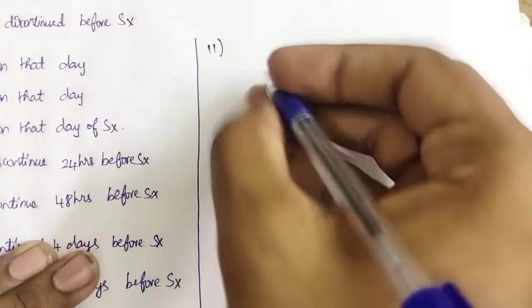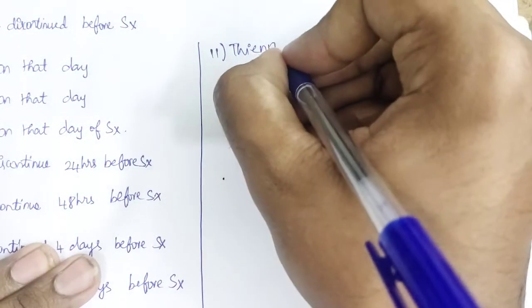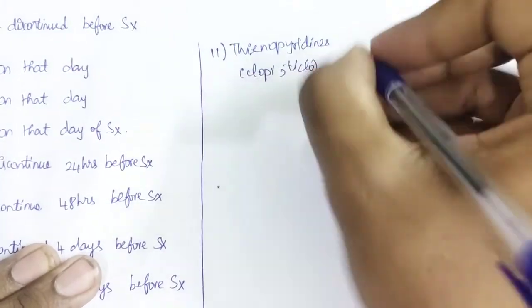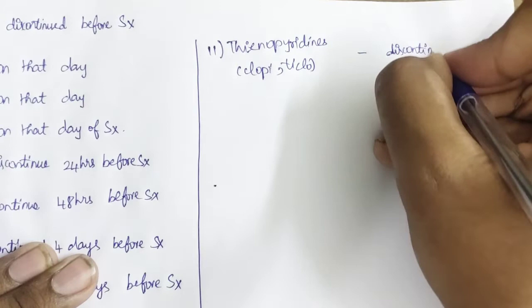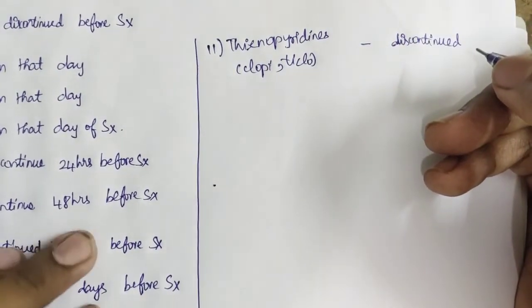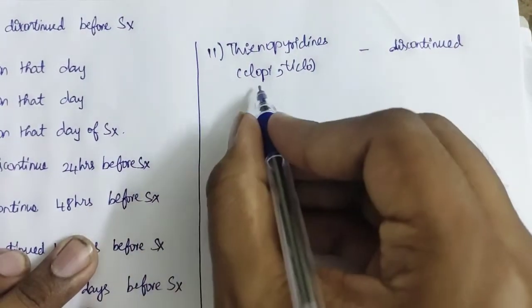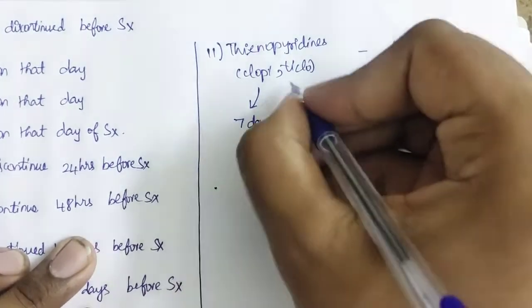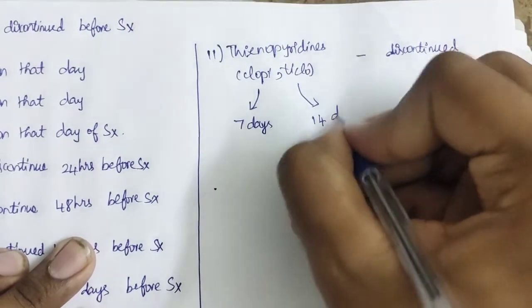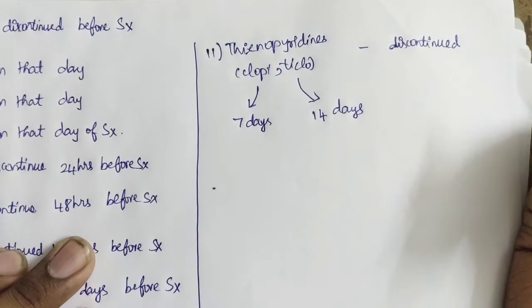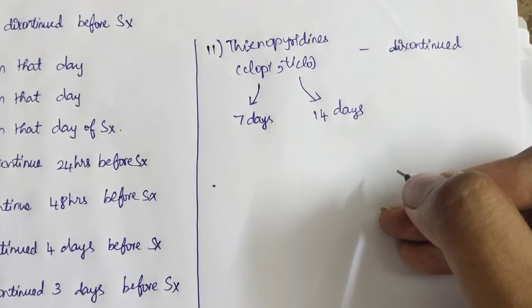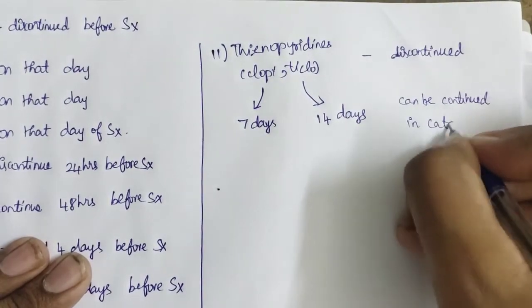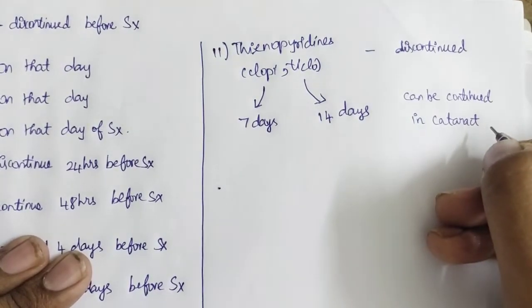The next is thienopyridines, like clopidogrel or ticlopidine. In some books, it has been given that there is a waiting period. Antiplatelets like clopidogrel have the waiting period of seven days. Ticlopidine has the waiting period of 14 days. Some exceptions are there for this drug. This drug can be continued in cataract surgery or any other stent surgery.